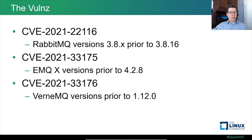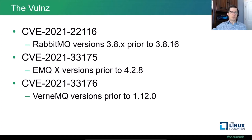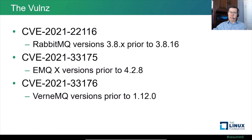There are three vulnerabilities in three different message brokers: one in RabbitMQ, which is a pretty popular open source message broker, one in EMQX, and one in VernMQ. And all of these I found using protocol fuzzing. The way message passing works is via network protocols, so for RabbitMQ I used fuzzing of the AMQP protocol, and for the other two — EMQX and VernMQ — I used fuzzing of the MQTT protocol.